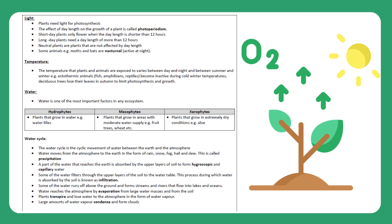Temperature: The temperature that plants and animals are exposed to varies between day and night, and between summer and winter. For example, ectothermic animals — fish, amphibians, and reptiles — become inactive during cold winter temperatures. Deciduous trees lose their leaves in autumn to limit photosynthesis and growth.